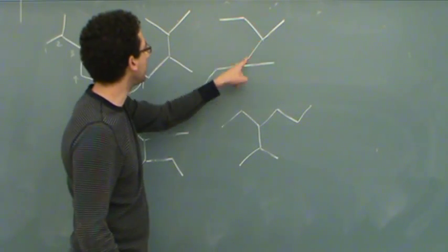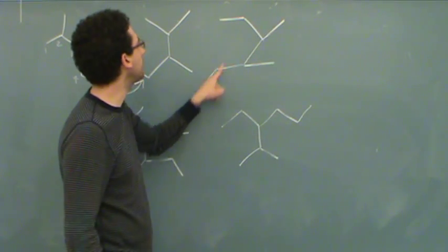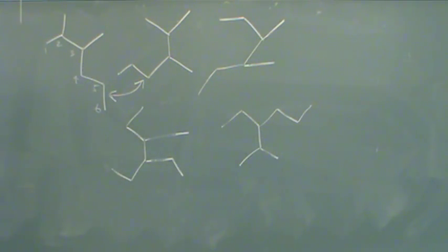This one is 1, 2, 3, 4, 5, 6. It's a hexane, but it's a 3, 4-dimethyl hexane. So that one's a little different.